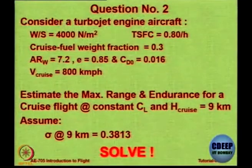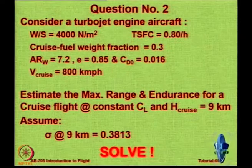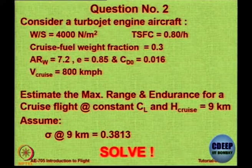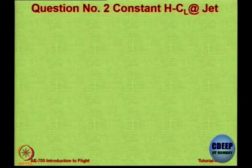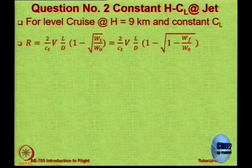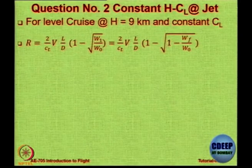For your convenience, the value of sigma is given at 9 kilometers, so the density at 9 kilometers will be 0.3813 × 1.2256 kg/m³, assuming ISA conditions, which we assume unless stated otherwise. Now, do you remember the equation for constant height, constant C_L? For your information, this is the equation.